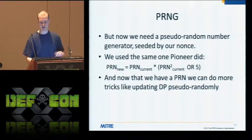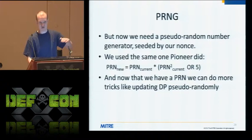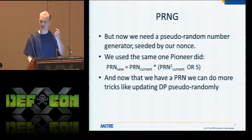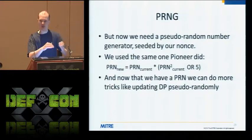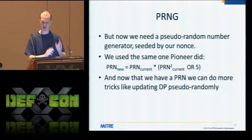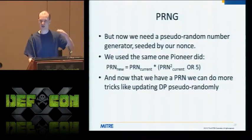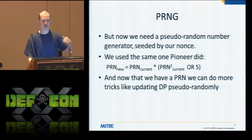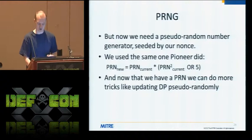We can also make the data pointer a function of this pseudo-random value. Instead of doing a strict linear sweep over our entire memory, we can bounce around and go to different locations each time. This means the attacker can't predict that at loop iteration 4086 he's going to hit his compromised data — he can no longer know when we're going to be reading any change he potentially made to our own code.